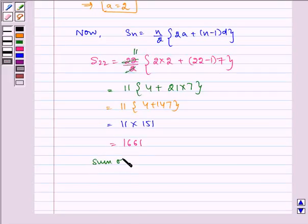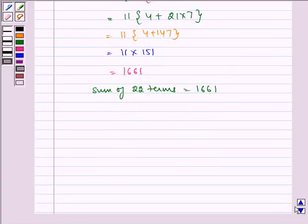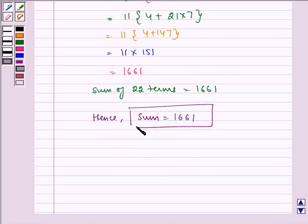Therefore, the sum of 22 terms equals 1661. Hence, sum equals 1661. I hope you understood the question. Bye and have a nice day.